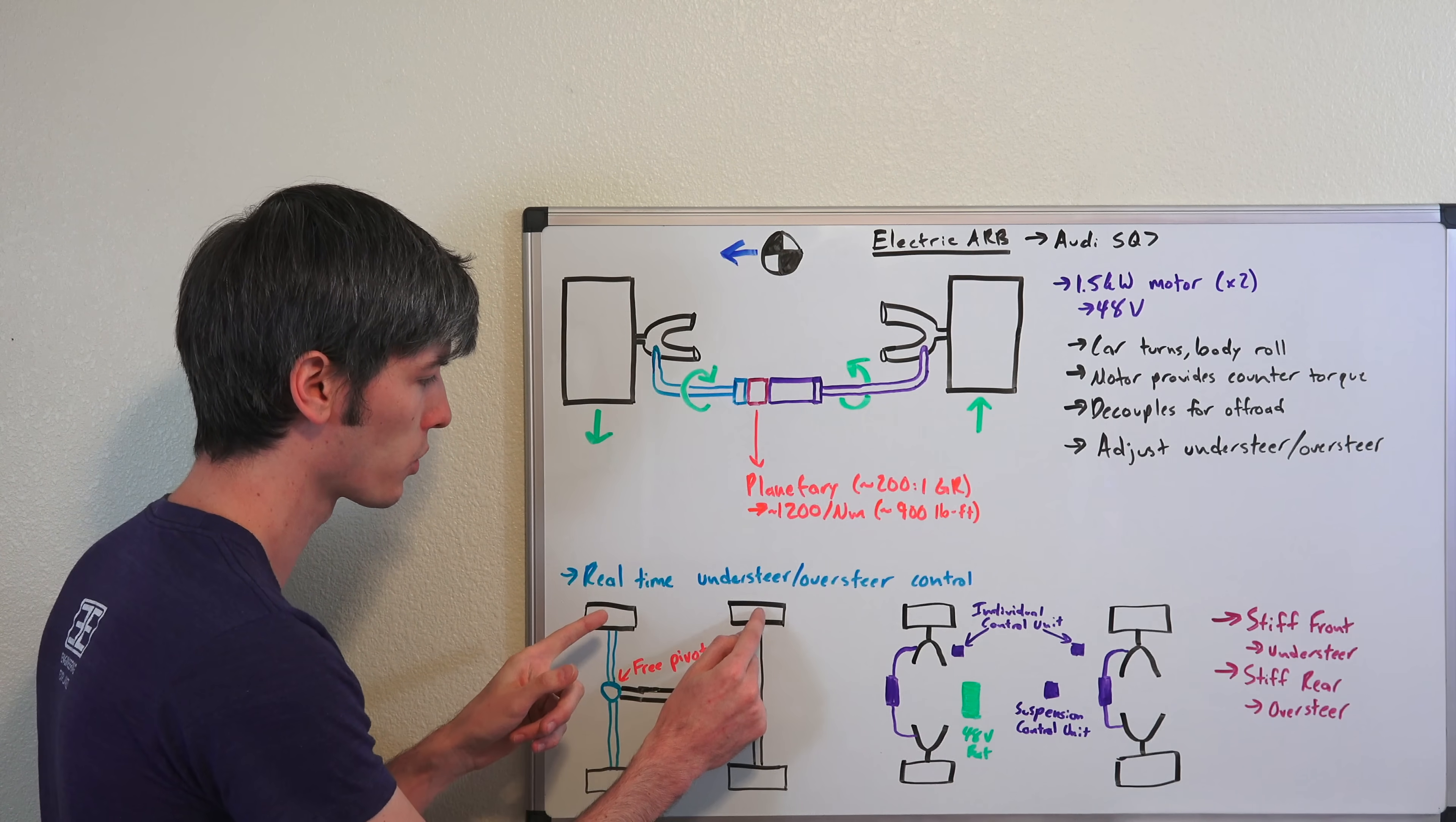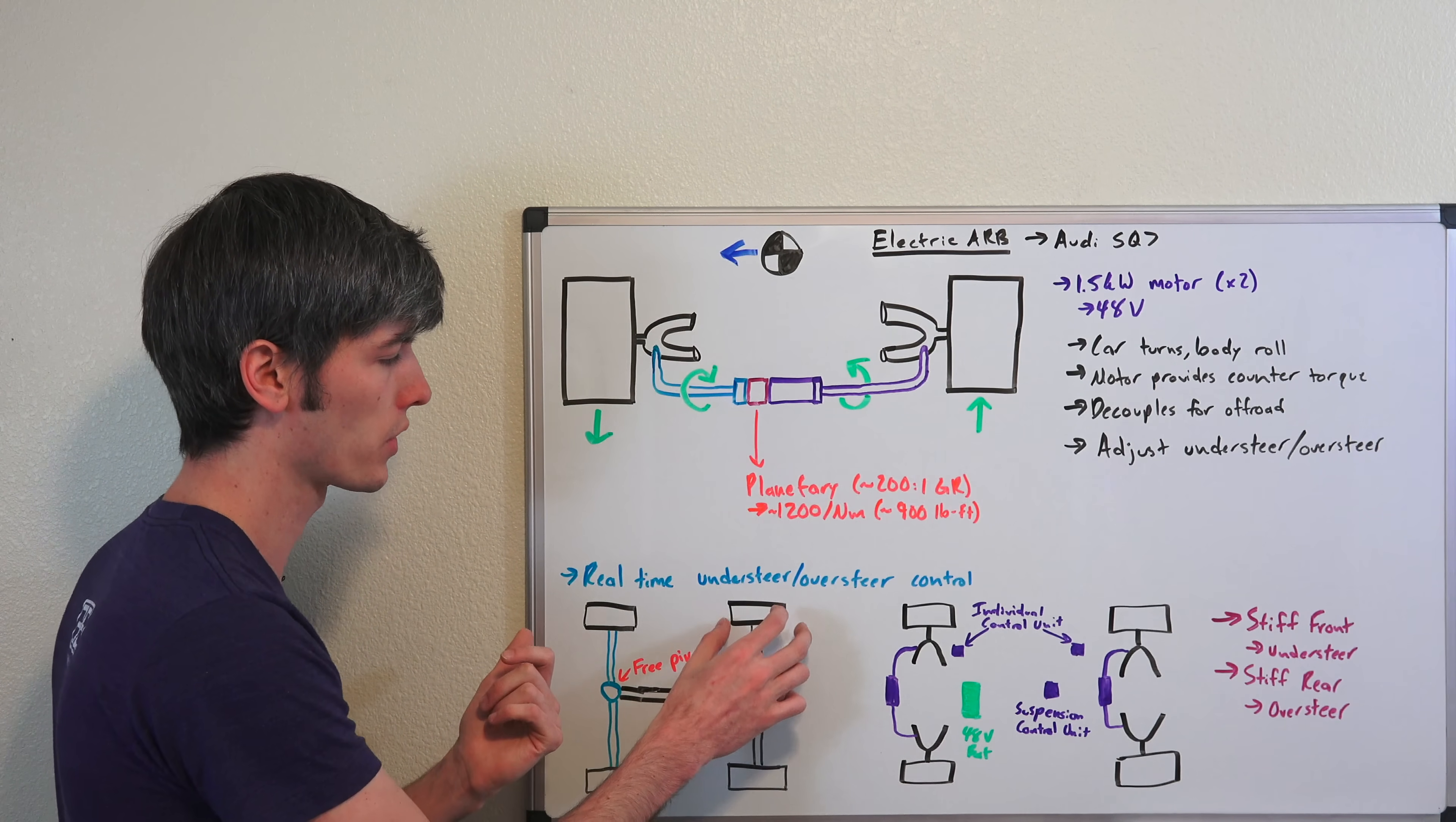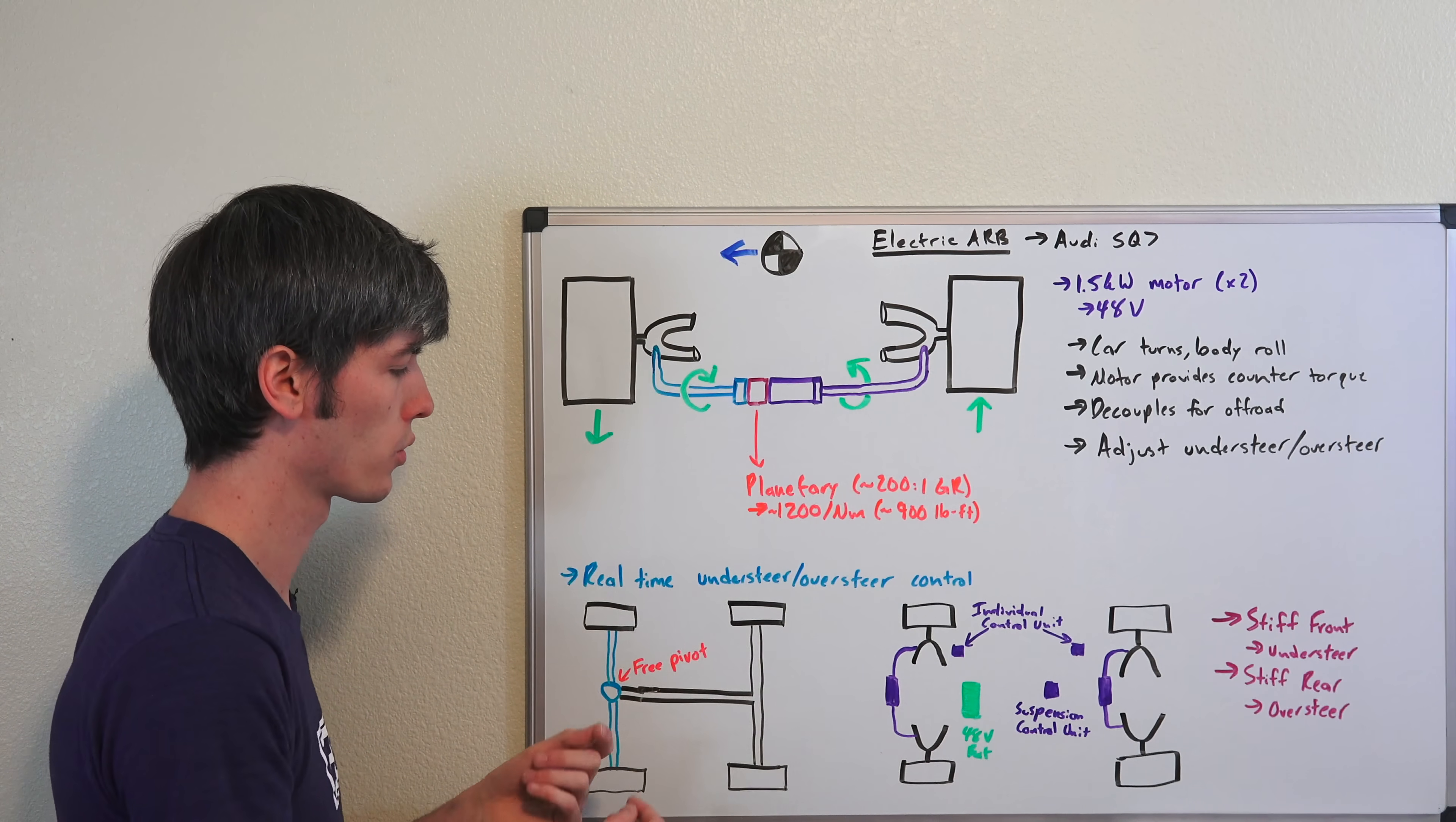As a result, because you're not evenly distributing load between front and rear and sending so much to that front left tire, it's going to start to understeer. This tire gets overloaded, so the front of the car starts pushing forward and loses grip.